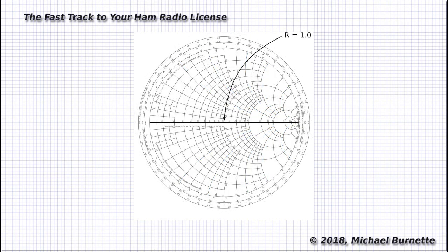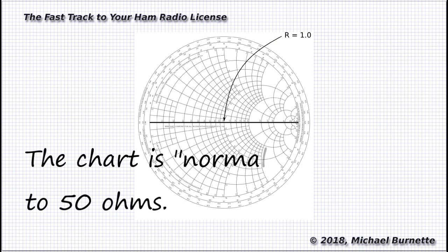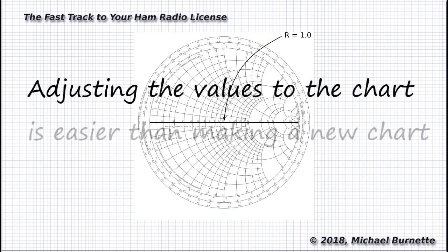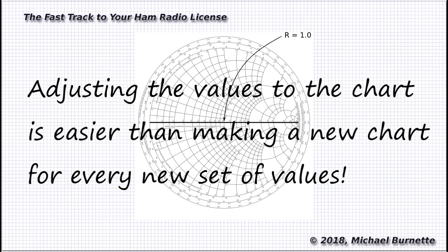For complicated reasons we don't need to go into, all the values on the chart are 1/50th of the real values. So the 1.0 in the middle of the resistance axis equals 50 ohms. We say the chart is normalized to 50 ohms. Because the chart is normalized to 50 ohms, we also have to normalize all the values we plug into it. It's very simple. Just divide everything by 50.